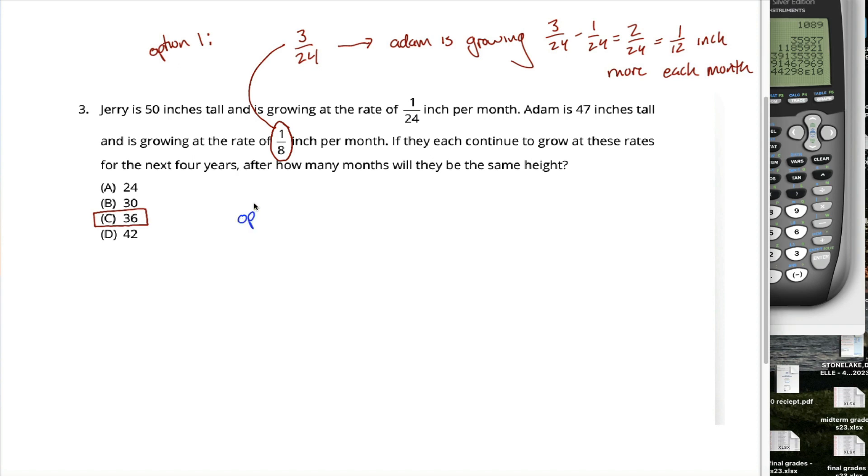This being a math test, some people probably take a more algebraic approach. You could say that Jerry's height as a function of time is equal to 50 plus 1/24th t, where t represents months into the future. Whereas Adam's height as a function of t is 47 plus 1/8th t. What you want to know is what t will be equal to when Jerry's height is the same as Adam's height. In other words, solve 50 plus 1/24th t equals 47 plus 1/8th t for t.